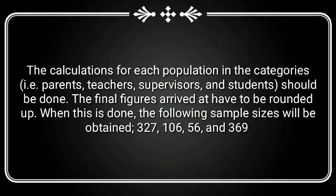The calculations for each population in the categories (i.e. parents, teachers, supervisors, and students) should be done. The final figures arrived at have to be rounded up. When this is done, the following sample sizes will be obtained: 327, 106, 56, and 369.